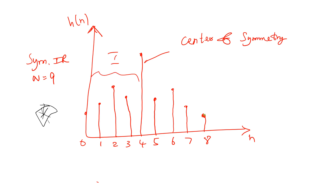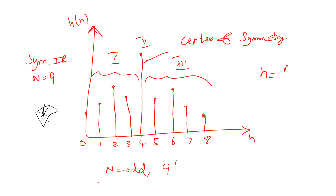We can take one side as phase 1 and the other as phase 3, and this is the phase 2 structure, representing the symmetric impulse response when N is set to be odd. Here I am taking the value of N as 9. When N is an odd number, the symmetric impulse response will have the center of symmetry at n equal to (N minus 1) divided by 2.